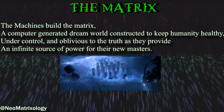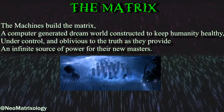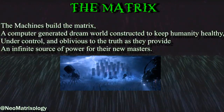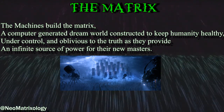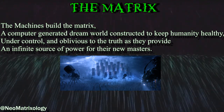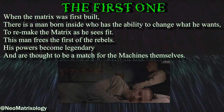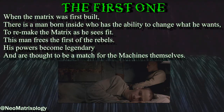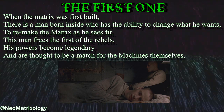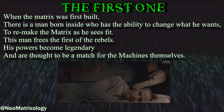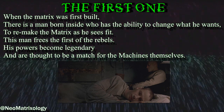The Matrix. The machines build the Matrix, a computer-generated dream world constructed to keep humanity healthy, under control, and oblivious to the truth as they provide an infinite source of power for their new masters. The First One — when the Matrix was first built, there is a man born inside who has the ability to change what he wants, to remake the Matrix as he sees fit. This man frees the first of the rebels. His powers become legendary and are thought to be a match for the machines themselves.